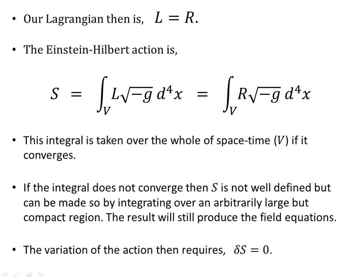The integral is taken over the whole of space-time if it converges. If it doesn't converge, we can take it over an arbitrarily large but compact region, and the end result will still be the field equations. The variation of the action requires that delta S is zero.